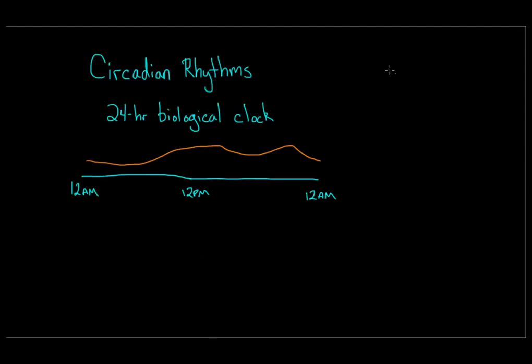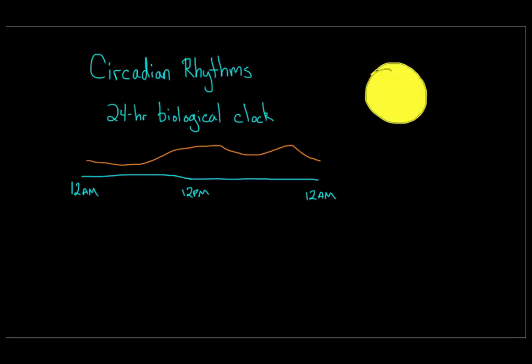Daylight is a big cue for circadian rhythms, and even artificial light can affect your biological clock. That's why when you travel somewhere with a big time difference, airplanes will usually adjust the lights in accordance with the time zone of your destination — they're trying to help you reset your biological clock. But resetting that clock takes time, which is when you experience jet lag: your biological clock says it's time to sleep, but your new time zone says it's time to wake up.